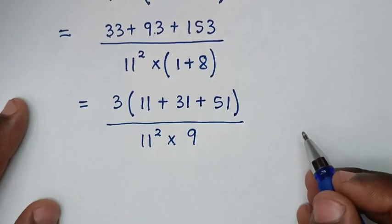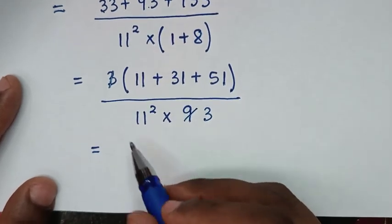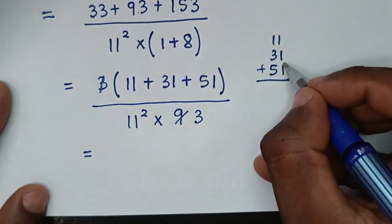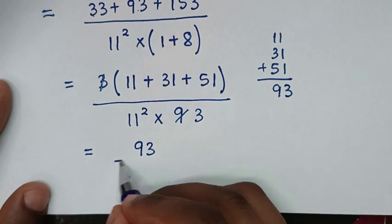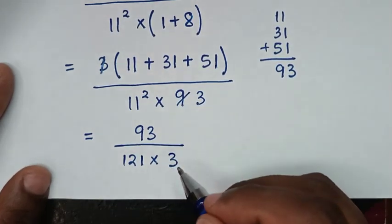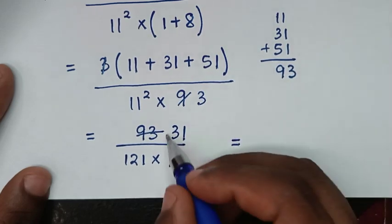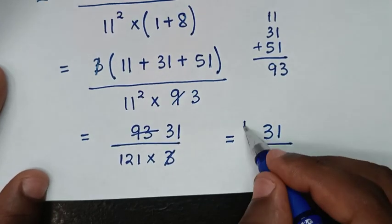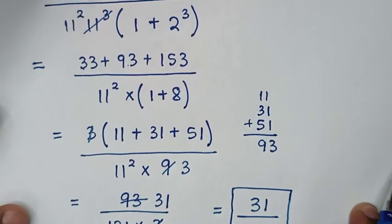1 plus 8 is 9. Now to simplify: 33 plus 93 plus 153 equals 279. Then over 11 squared which is 121, times 3 — since 279 divided by 9 is 31, and 9 divided by 9 is 1 — so it will be equal to 31 over 121. So 31 over 121 is our final answer. Thank you, don't forget to subscribe to my channel and see you in the next video.